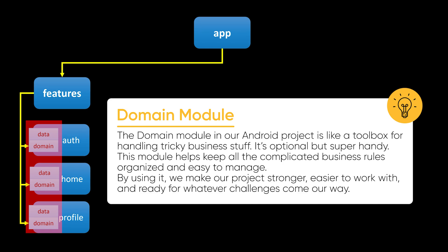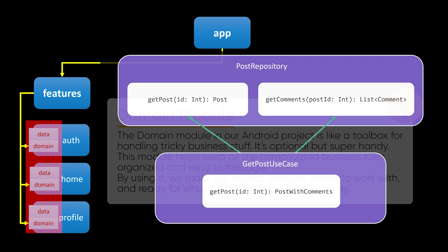Let me give you an example. Imagine we are showing a grid of posts as we displayed in our home screen. Each post has comments. In the data layer we have one team fetching posts and another getting comments, but in our application we want to show posts with their comments. That's where the domain layer comes in — it puts the logic together and hands us a neat package with both posts and comments.